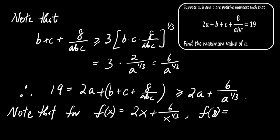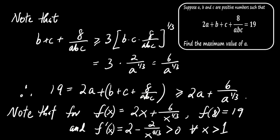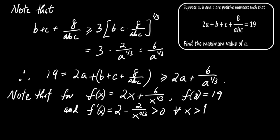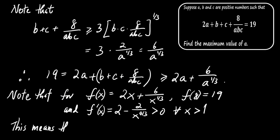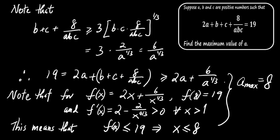We know that f(8) = 19. We take the derivative of f(x) and find that f'(x) = 2 minus 2 divided by the fourth power of the cube root of x. This is positive for all values of x greater than 1, so the function is increasing. Since f(x) ≤ 19, we conclude that x must be less than or equal to 8. Therefore the maximum value of A is 8.